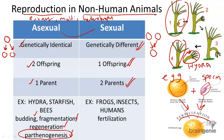Some animals even have both male and female sex organs, such as the earthworm. This type of organism is called a hermaphrodite.